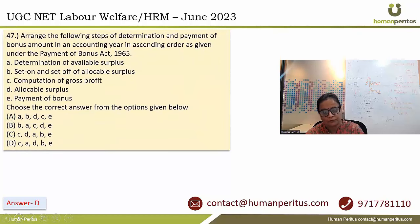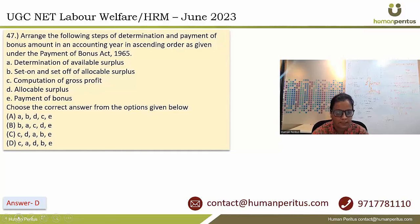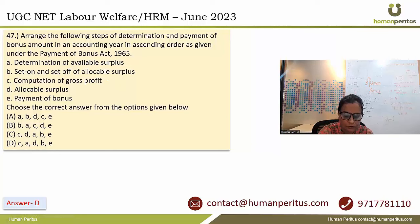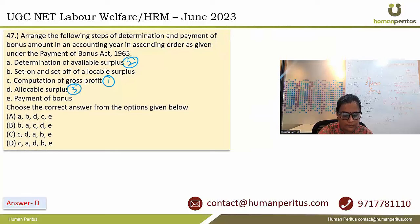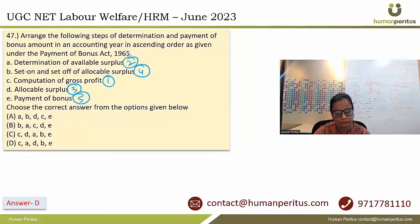We have to arrange the steps of determination and payment of bonus as per the Payment of Bonus Act. We start with computation of gross profit as per Schedule 1 and Schedule 2 in the act. The next step is determination of available surplus, then allocable surplus, then applying set-on and set-off rules, and finally payment of bonus. Answer is D.